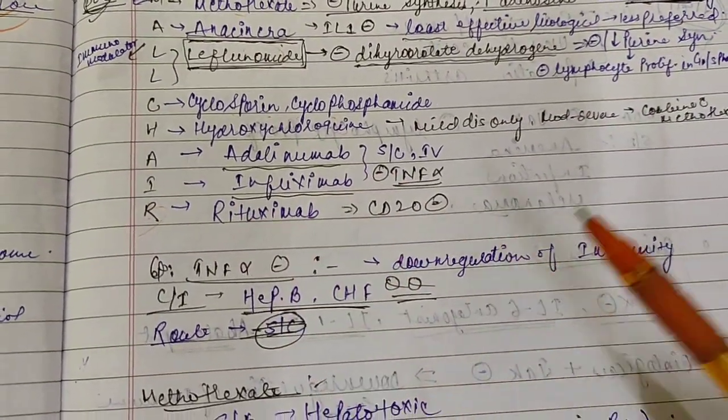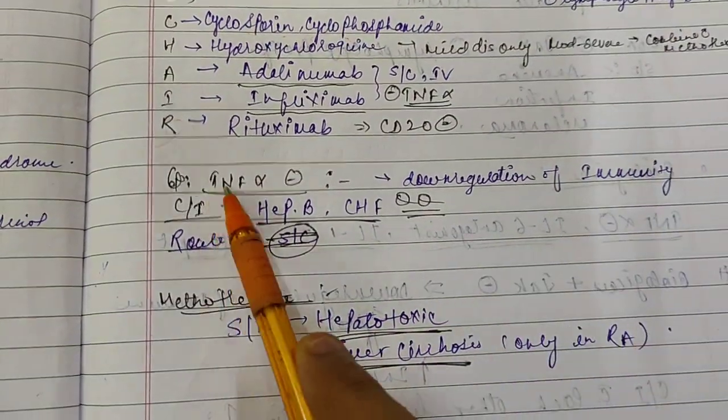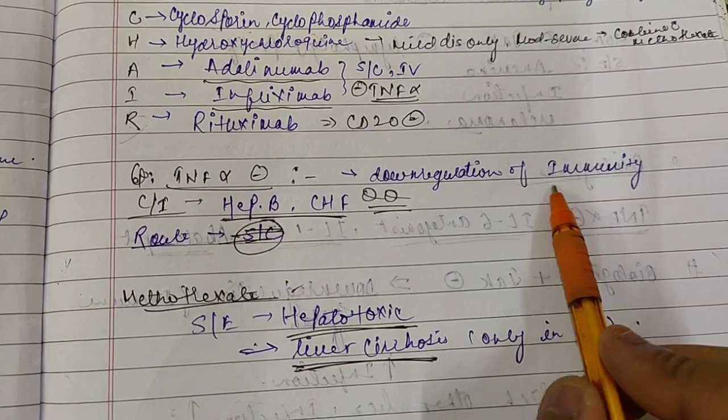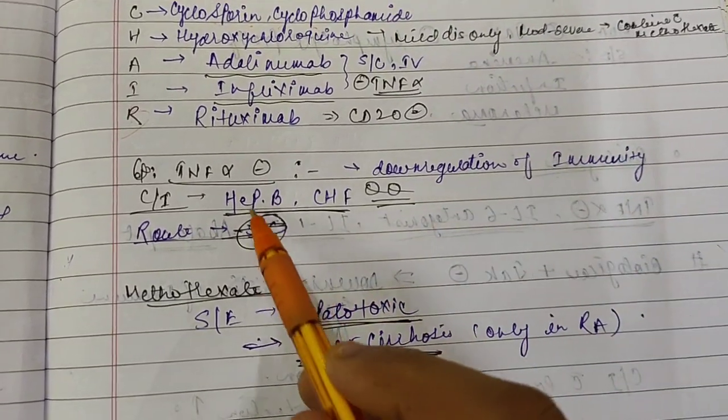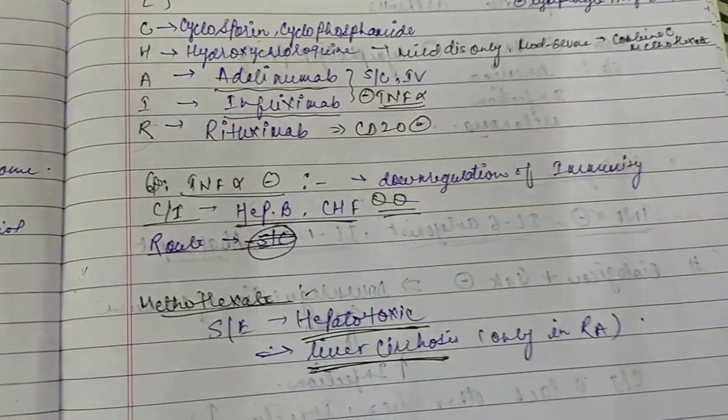The last is your Reduximab. So it is CD20 inhibitor. Now coming to the interferon alpha inhibitors, so the downregulation of immunity will be caused as a side effect, and contraindicated in Hepatitis B and CHF. Mind this, this is important question that interferon alpha inhibitors are contraindicated.